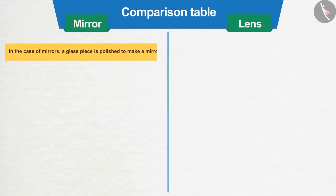Number 1: In the case of mirrors, a glass piece is polished to make a mirror. And here, any transparent spherical piece of glass is known as spherical lens.